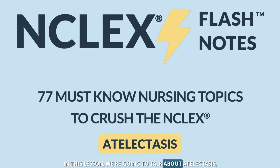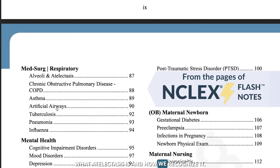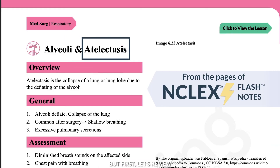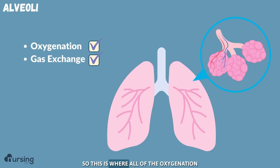In this lesson, we're going to talk about atelectasis — what atelectasis is and how we recognize and treat it. But first, let's review that the alveoli are the functional unit of the lungs. This is where all of the oxygenation and gas exchange occurs.